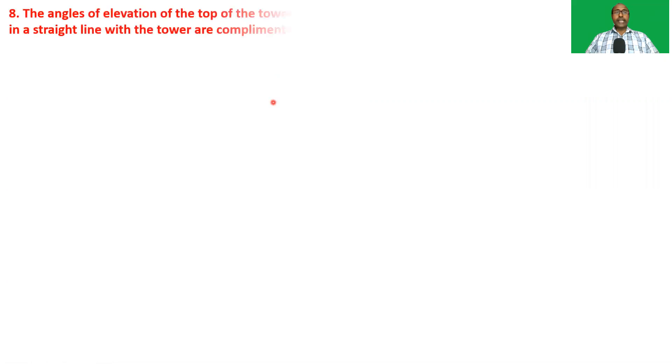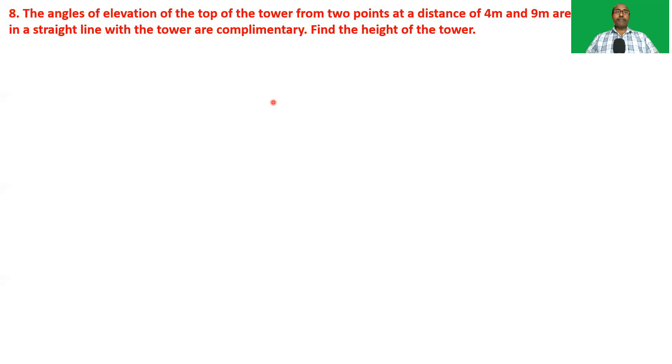Dear students, welcome to my classroom. In this class I am going to complete our new chapter — our previous chapter, Applications of Trigonometry. Let us start today's class. Problem 8: The angles of elevation of the top of a tower from two points at a distance of four meters and nine meters in a straight line with the tower are complementary. Find the height of the tower.